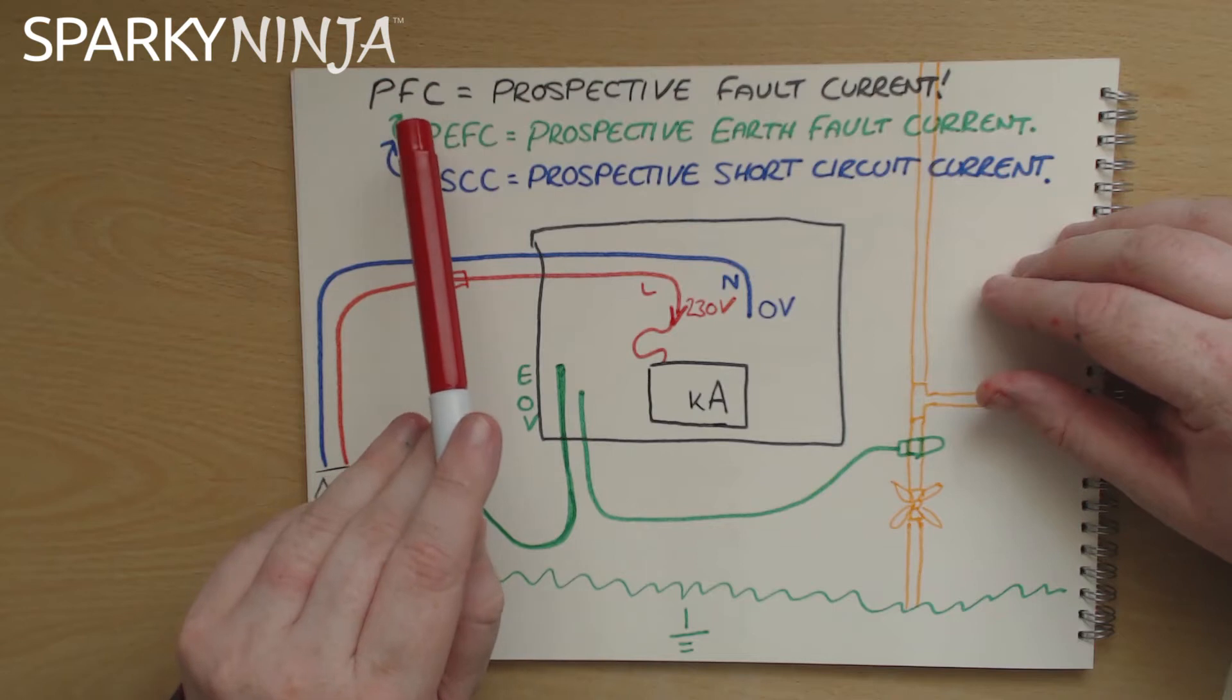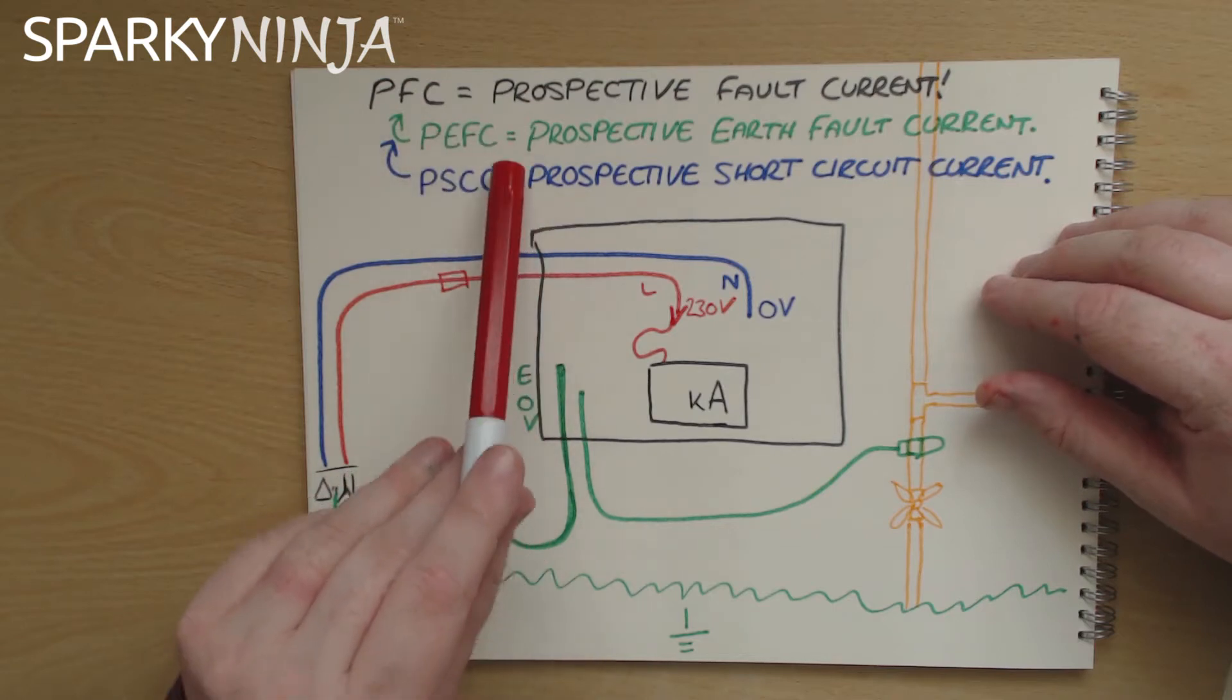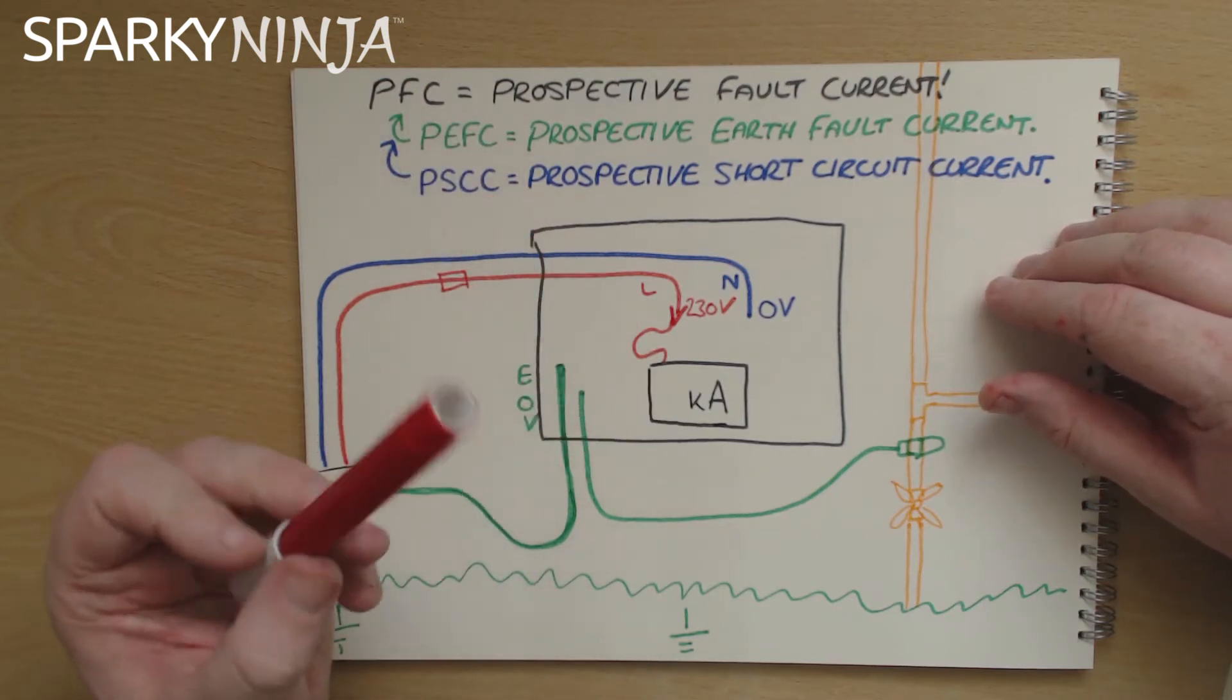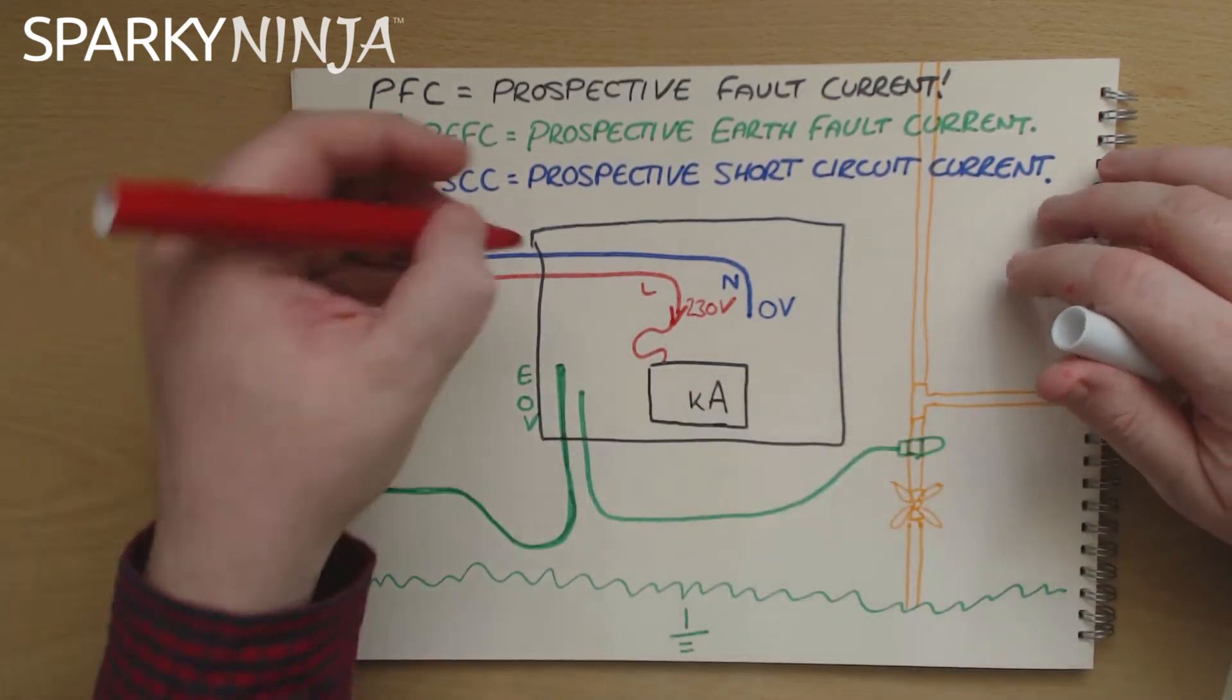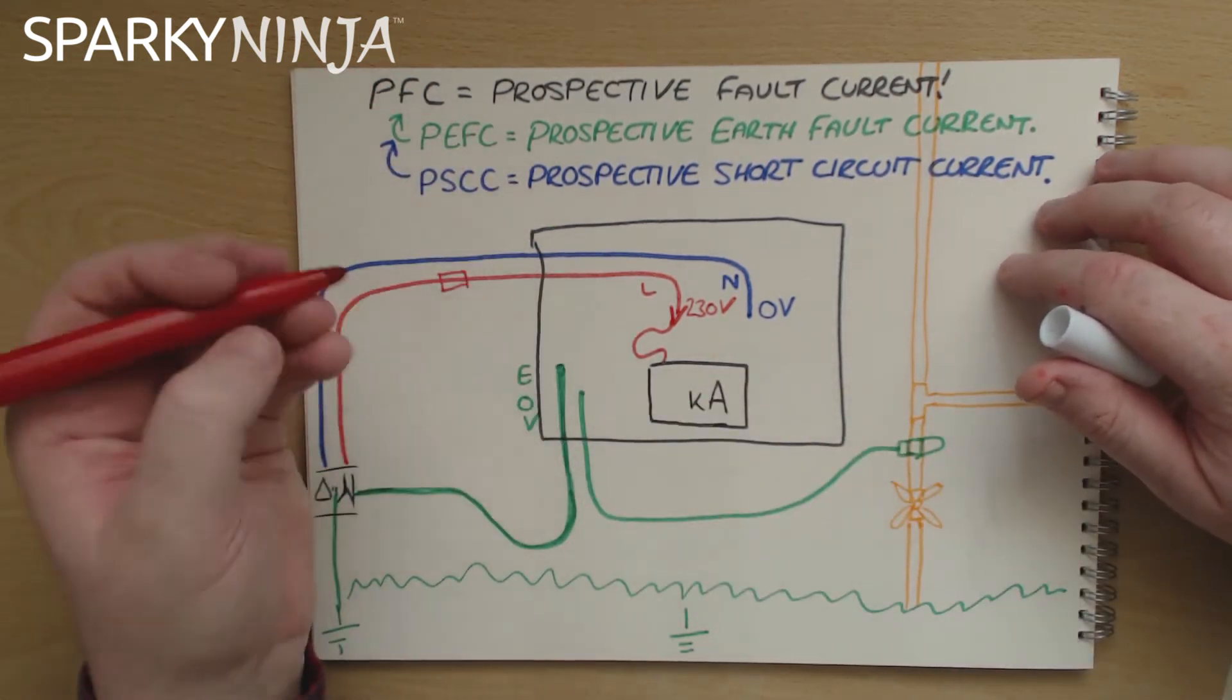We record them as the prospective fault current because it's considered the highest of the two is the only one that is of real concern. The point of that being within this consumer unit there's going to be hard to illustrate here.